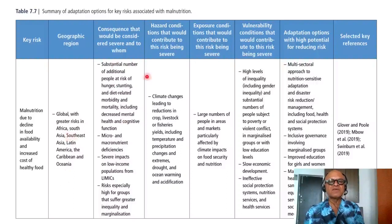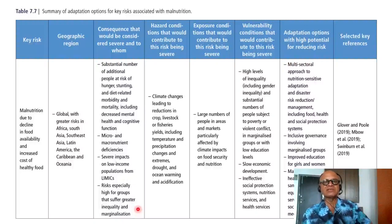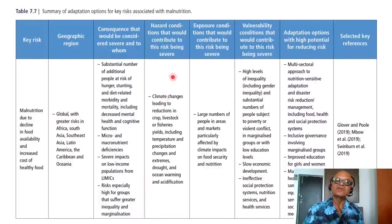Consequences considered severe include a substantial number of additional people at risk of hunger, stunting, and diet-related morbidity and mortality, including decreased mental health and cognitive function, micronutrient and macronutrient deficiencies. Hazard conditions contributing to severe risk include climate change leading to reductions in crop, livestock, or fisheries yields, including temperature and precipitation changes, extremes, droughts, and ocean warming and acidification.